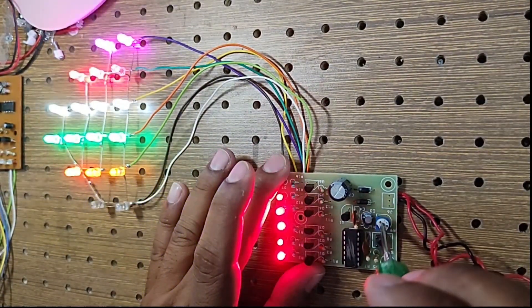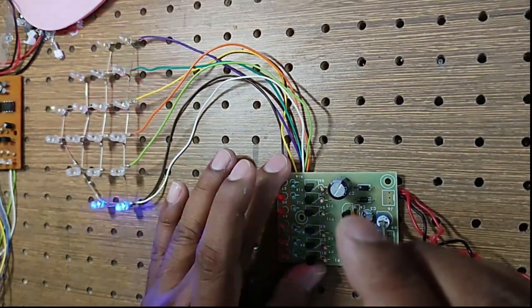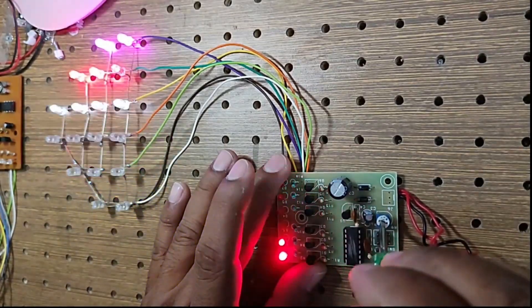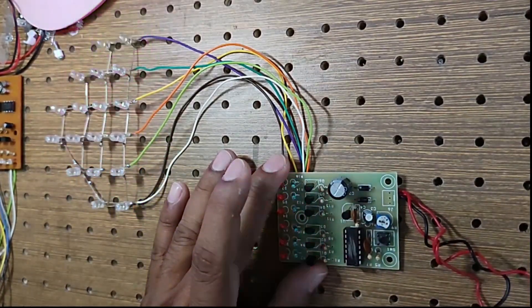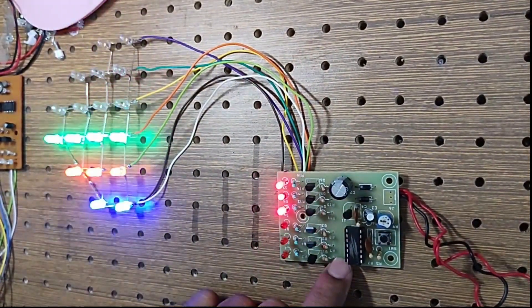If I increase and decrease, the speed changes. See, now it has slowed down. Slowly I can increase the speed—the same feature available with the 555 circuit. Now I increase the speed; again I decrease the speed.